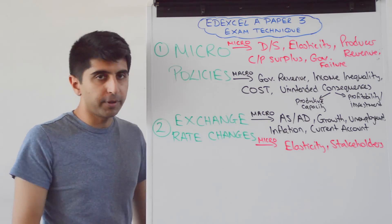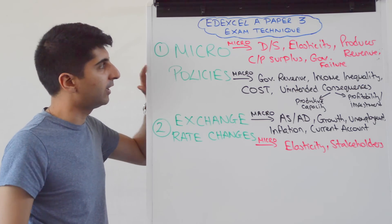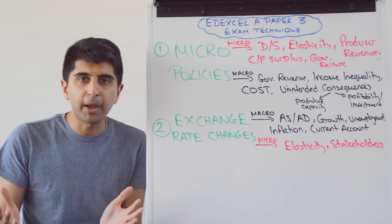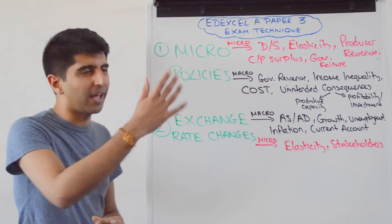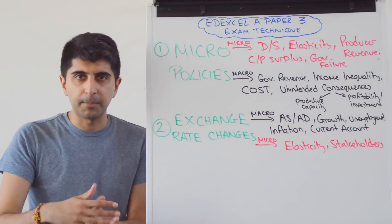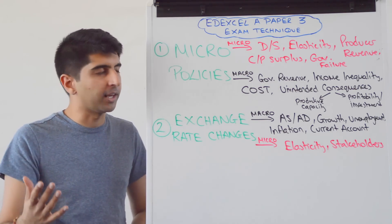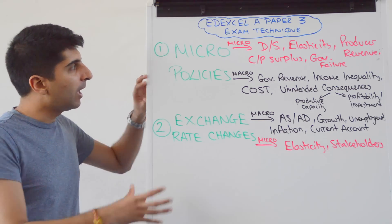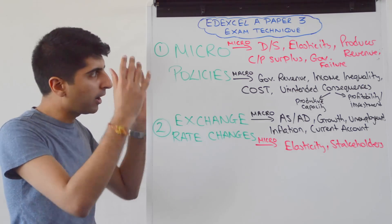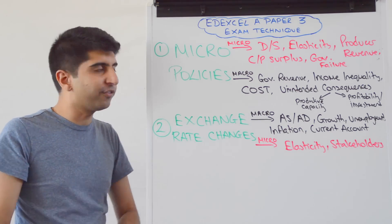Let's take a couple here: micro-policies and then exchange rate changes. So let's say you're discussing a given micro-policy — it won't be generally micro-policies, it will be a specific one like price controls or indirect tax or something like that. But let's generalise and say micro-policies — what general things can you look for?